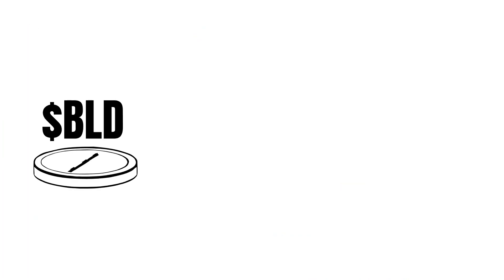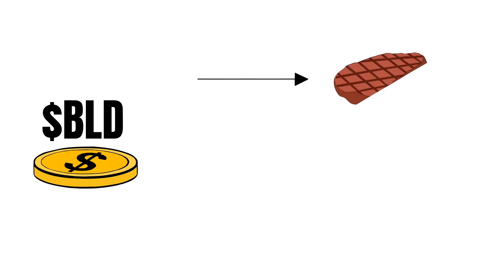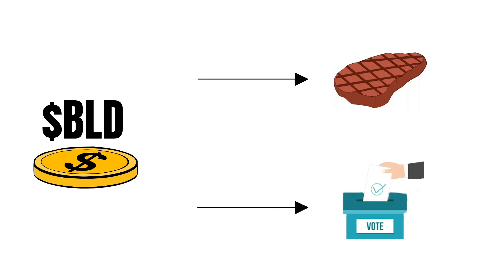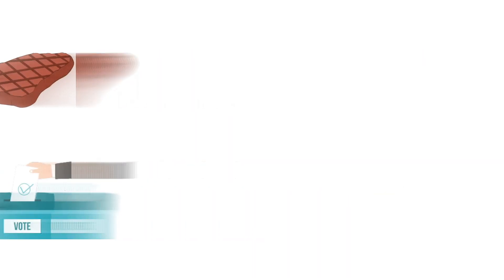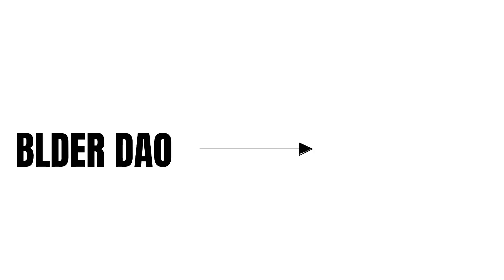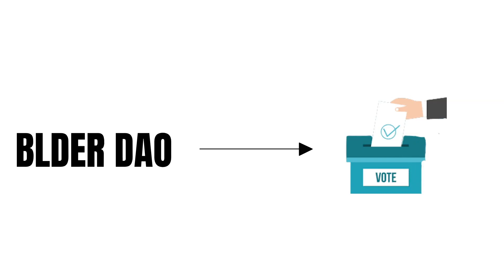Another thing to understand is BLD. BLD is the staking and governance token of the Agoric blockchain. Besides, it also represents the governance token of the Inter Protocol. Lastly, you have to understand what the Builder DAO is all about. It is a DAO where people can vote on governance proposals by staking BLD.